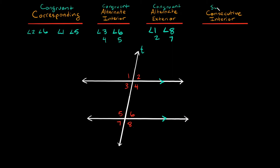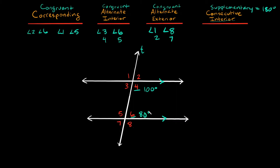Now lastly, we have consecutive interior angles, and these angles are supplementary — in other words, they add up to 180 degrees. So again, we're talking about interior angles, but now we're going to talk about angles that are on the same side. Remember, these are our interior angles: three, four, five, and six. Four and six would be consecutive interior angles — if I added these up, they would add up to 180 degrees. So if four was 100 degrees, then six would be 80 degrees. Same thing on this side — if five was 100 degrees, then three would have to be 80 degrees. When these two lines are parallel, they always have to add up to 180 degrees.